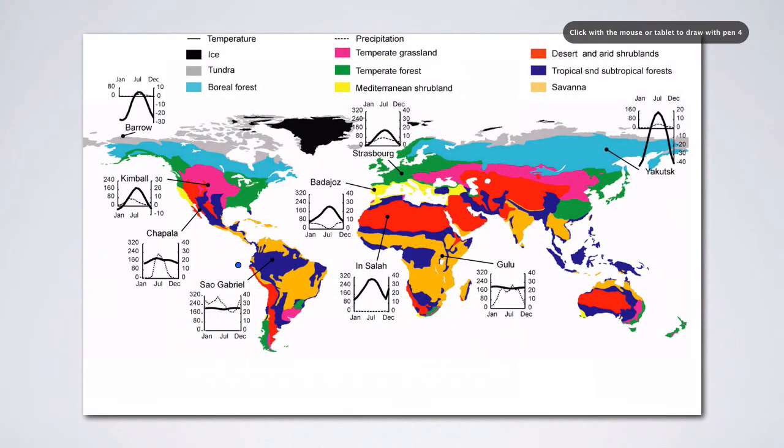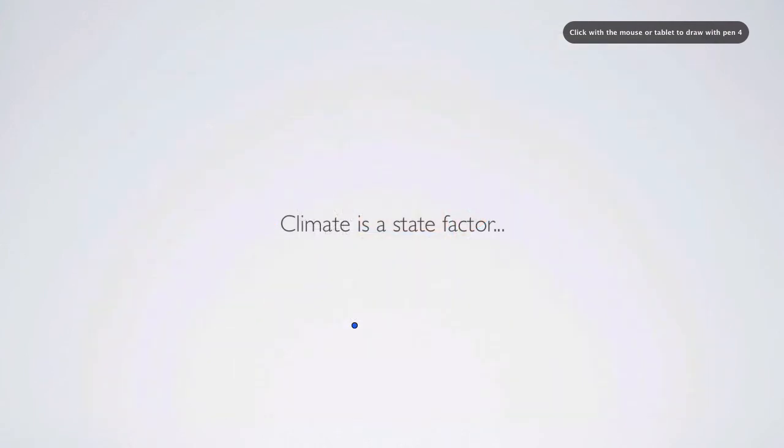These climate diagrams are, you can also find in the book, and they're shown for different places in the world. And this is kind of the second level of understanding of climate is not only its average, but its seasonal patterns.